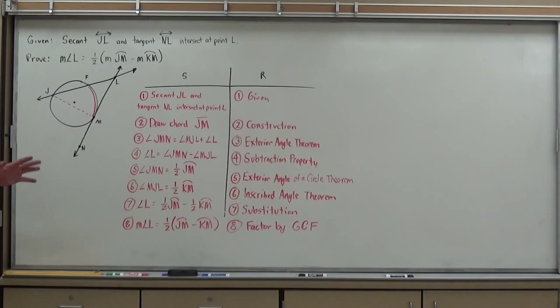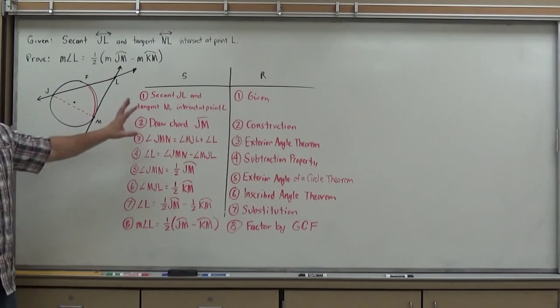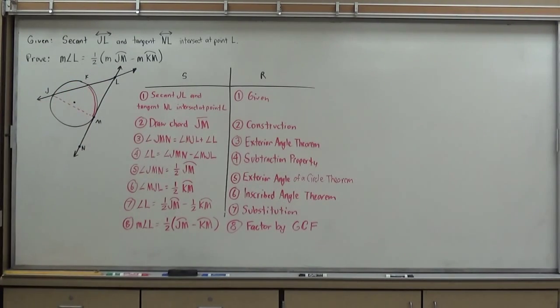So, again, the proofs can be tricky. But, again, if you look to construct a circle and look for either the interior angles of a triangle theorem or exterior angle triangle theorem, to get you started, you should be able to then just start plugging in arc measures for the angles that you've written and help you solve the proof. Thank you, and good luck.